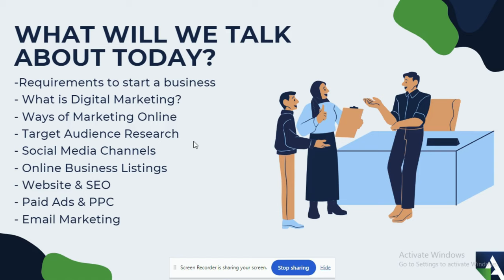Then we'll cover paid ads — not really how to do them, but what they are and the different platforms you can run them on. Finally, the last item is email marketing: how you can automate emails and send them to existing customers and new targets, sending automatic emails every week or every two weeks so that they know about your business and your services.